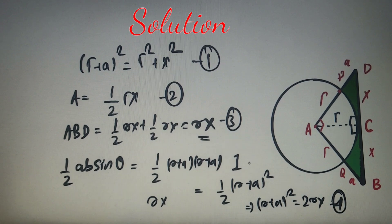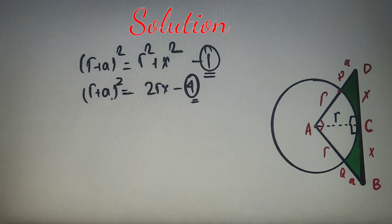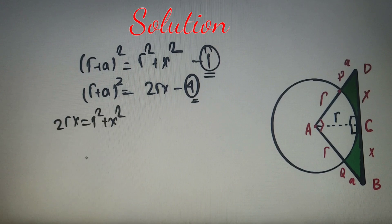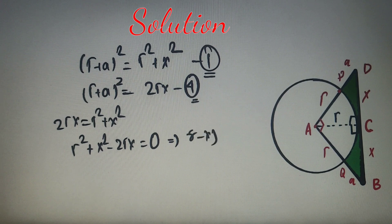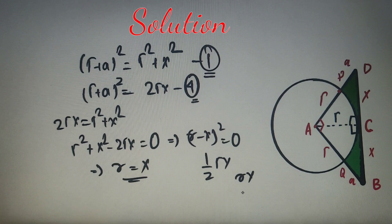Comparing equation one and equation four, both contain (R + a)². Substituting equation four into equation one: 2Rx = R² + x², which rearranges to R² + x² − 2Rx = 0, or (R − x)² = 0. This gives R − x = 0, so R = x. Replacing x with R in our area expression, the area of triangle ABD equals R².